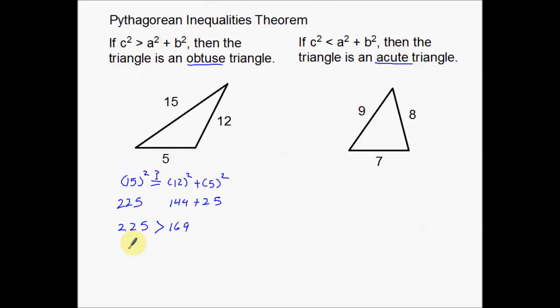Since that side, since the hypotenuse is way too big, that creates a big angle down here and it creates an obtuse, creates an obtuse triangle.